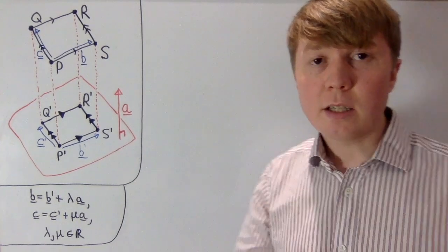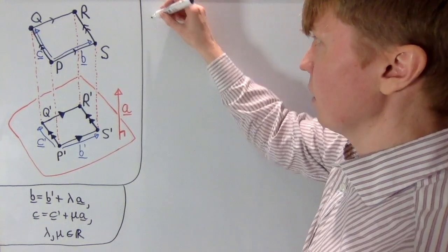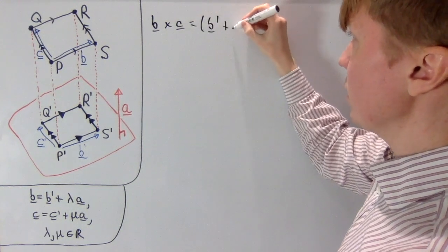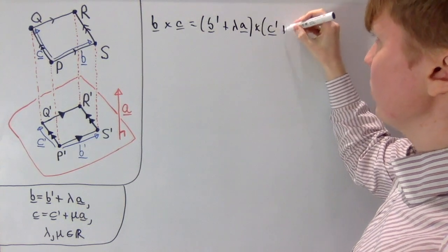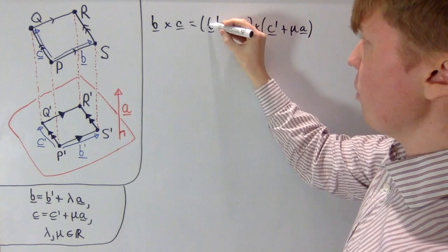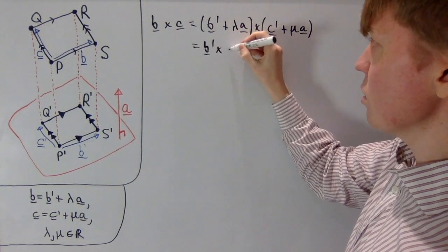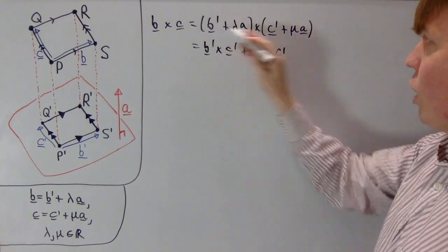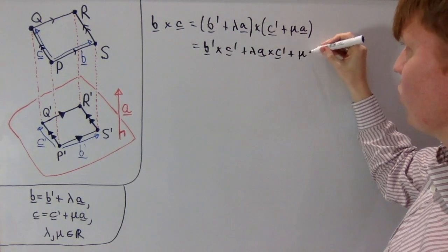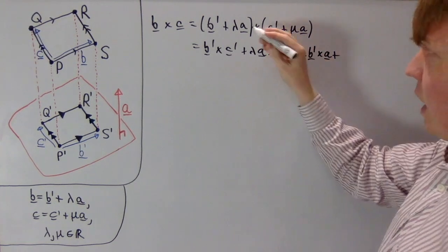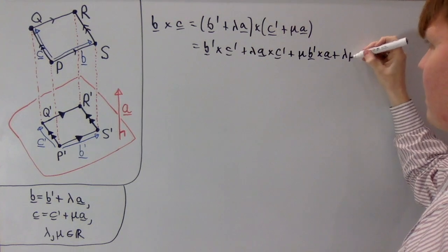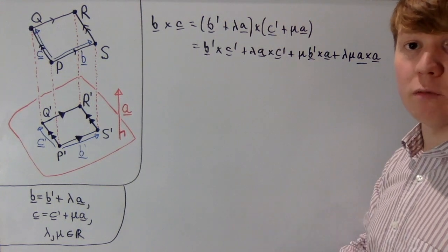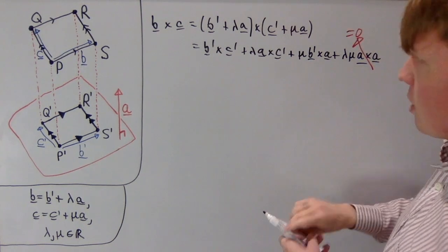The first step in finding the scalar triple product of a, b, and c is to calculate b cross c. Replacing b and c with our new expressions, we get b cross c equals (b prime plus lambda a) cross (c prime plus mu a). Expanding the cross products, we get b prime cross c prime, plus lambda (a cross c prime), plus mu (b prime cross a), plus lambda mu (a cross a). Since a cross a equals zero, that last term disappears.